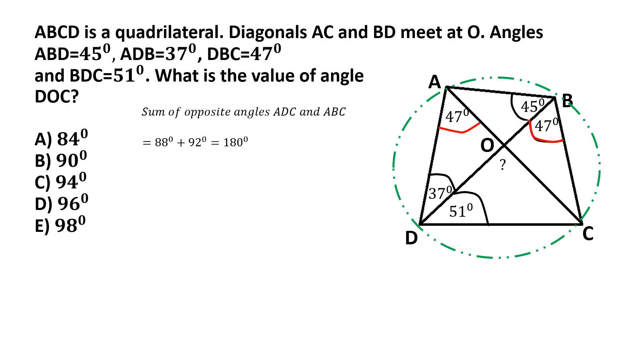And now if you consider the angle that we are asked to find out, that one in question mark, that's basically the exterior angle of triangle AOD. And we know that the sum of the two interior opposite angles should equal the exterior angle.